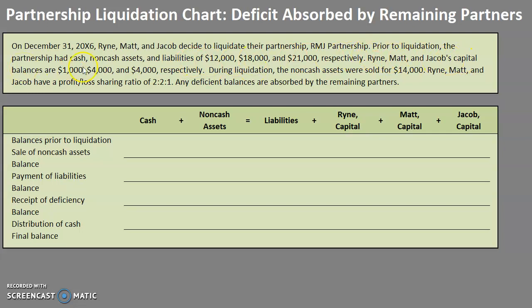There are also some capital balances here for us to consider. During the liquidation, the non-cash assets were sold for $14,000, which is important since we have $18,000 worth of book value of our non-cash assets. Ryan, Matt, and Jacob have a profit-loss sharing ratio of 2 to 2 to 1, and any deficient balances are absorbed by the remaining partners.